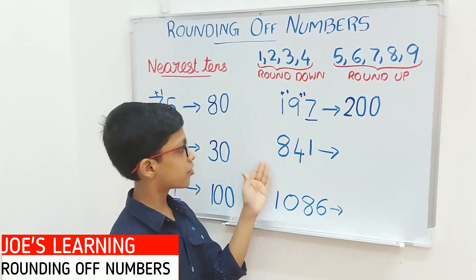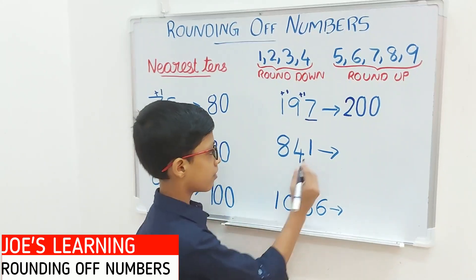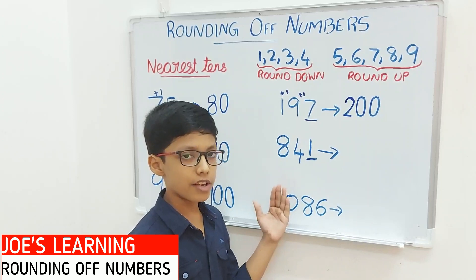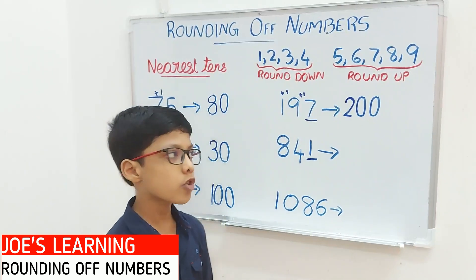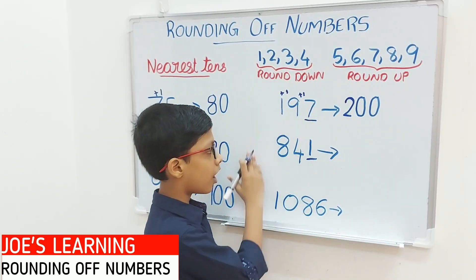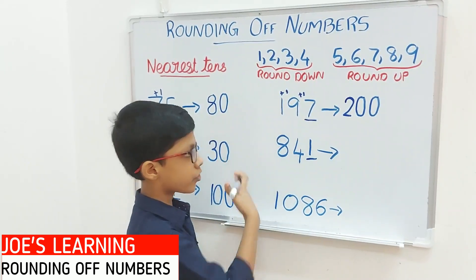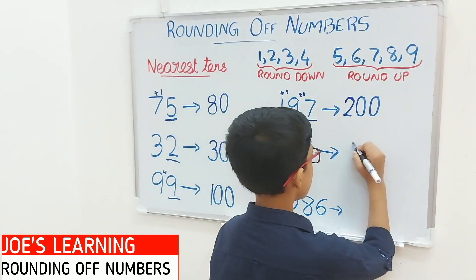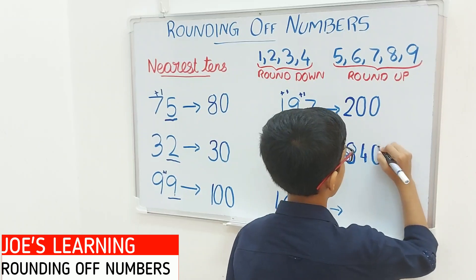Now let's try with the number 841. In this number we look at the digit in the 1's place — 1 is in the 1's place. Since 1 is lesser than 5, we only put a 0 in the 1's place, leaving the digits in the other places — hundreds and beyond — the same as they are. So 841 rounded off to the nearest tens equals 840.